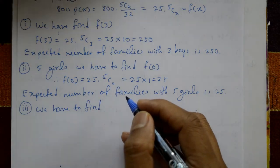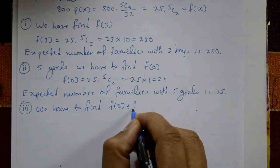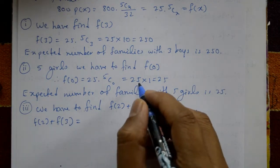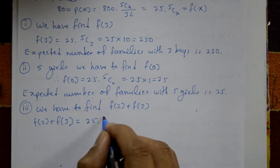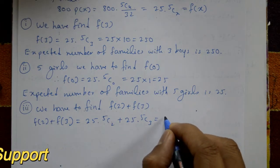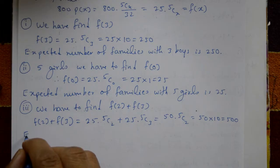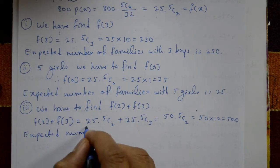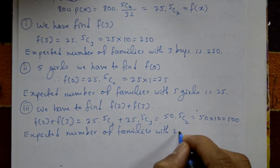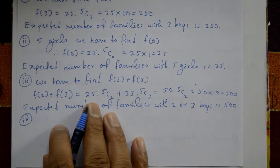Case 3: either two or three boys. We calculate f(2) + f(3) = 25 × 5C2 + 25 × 5C3 = 25 × 10 + 25 × 10 = 500. The expected number of families with two or three boys is 500.